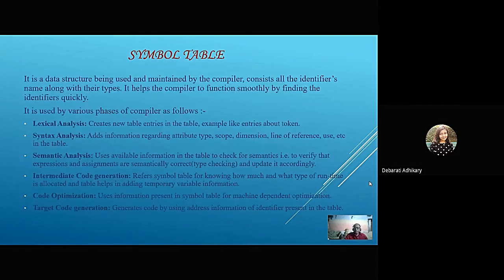Next, we will discuss Symbol Table. Symbol Table is an important data structure being used and maintained by the compiler. It consists of all the identifiers' names along with their types. It helps the compiler function smoothly by finding identifiers quickly. In lexical analyzer, it creates new table entries like entries about tokens. In syntax analysis, it adds information regarding attribute type, scope, dimension, line of reference, use, etc.